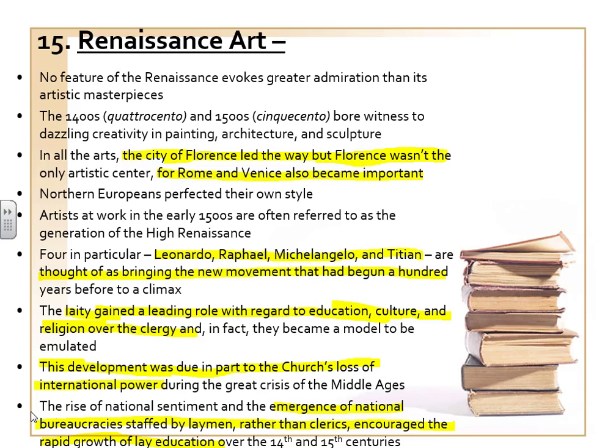The term 'High Renaissance' denotes a period of tremendous artistic creation taking place mainly in three cities: Florence, Rome, and Venice. The artists involved would be Leonardo da Vinci, Raphael of Urbino, Michelangelo Buonarroti, and Titian — who is the least familiar, I'm sure, because he's not a Ninja Turtle.